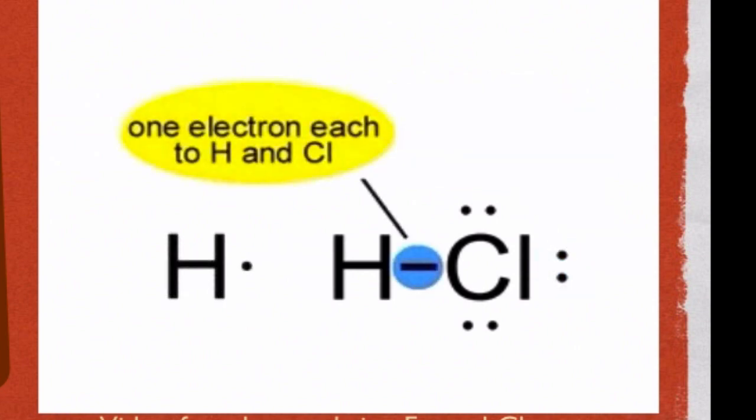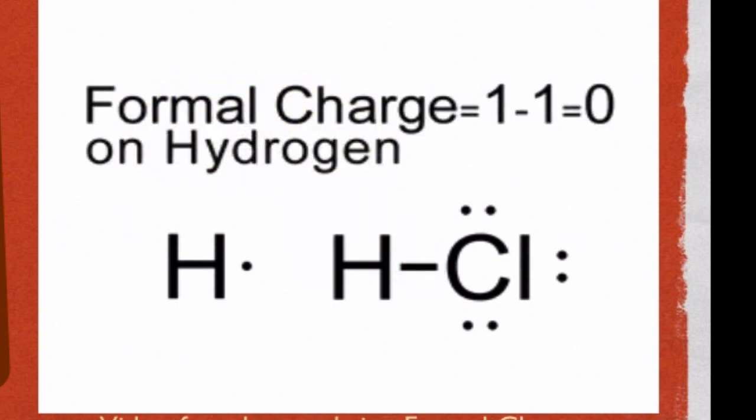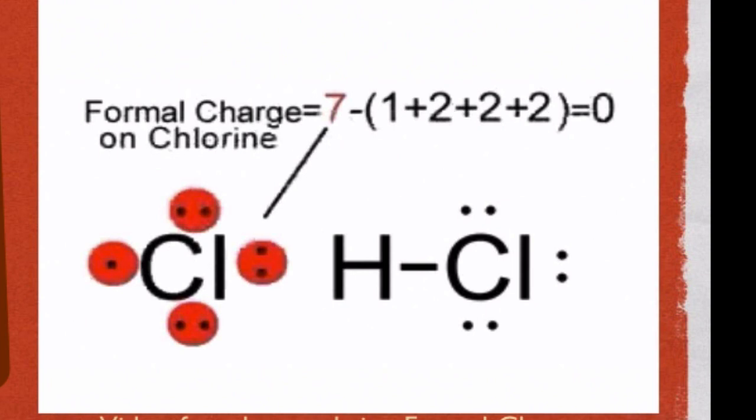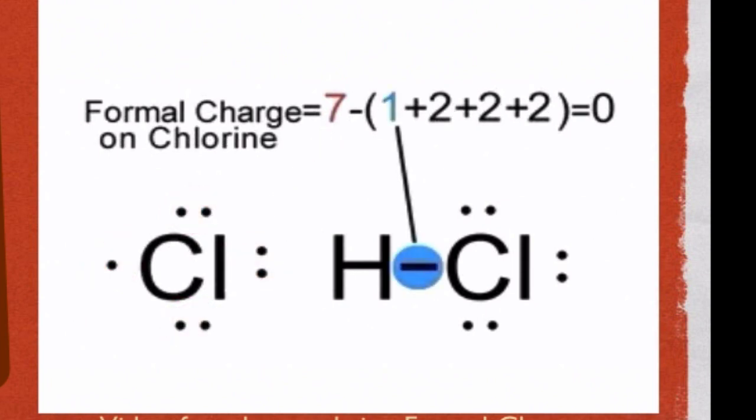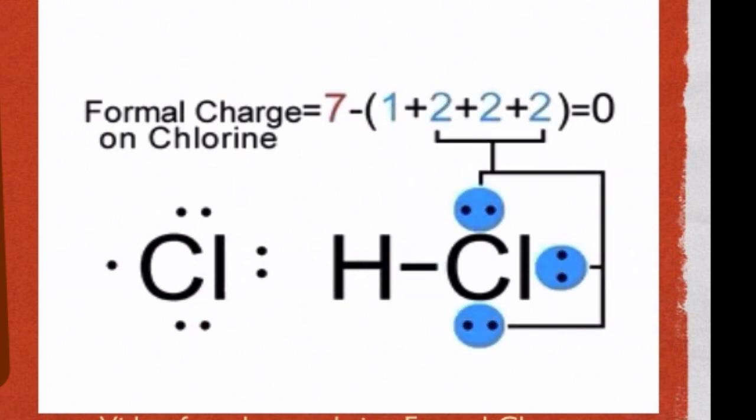The free hydrogen atom has one valence electron. The formal charge on hydrogen in HCl is calculated to be zero. The free chlorine atom has seven valence shell electrons. The formal charge on chlorine in HCl is also calculated to be zero.